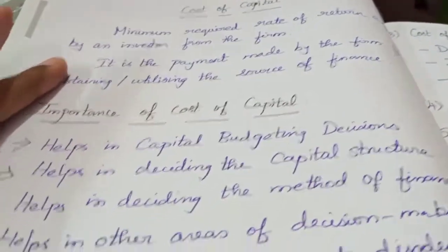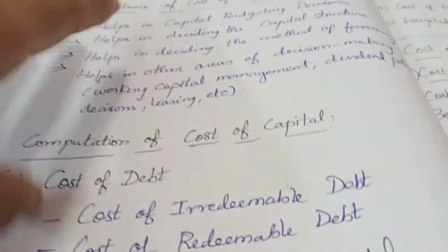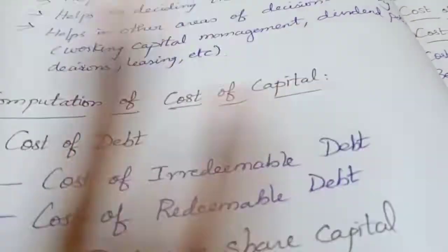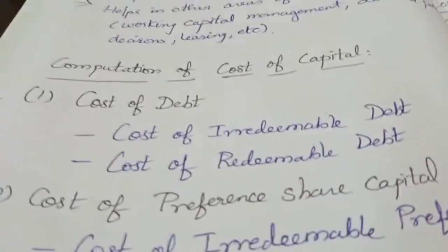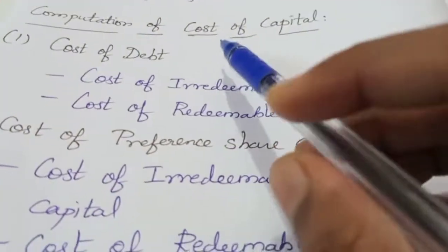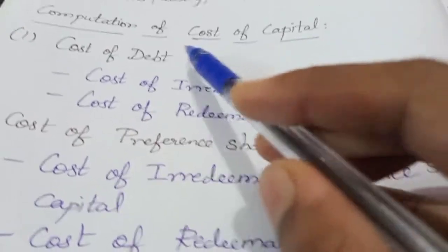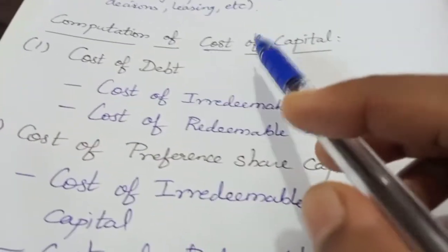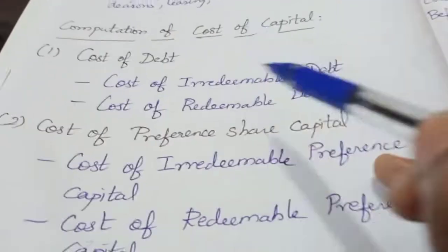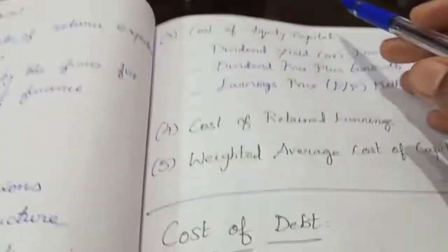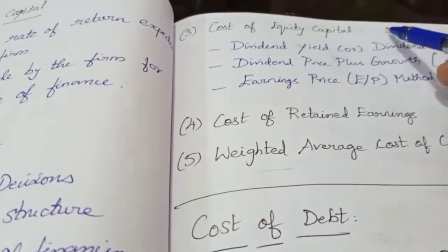So next, we will see how to compute this cost of capital. One company has debt — debentures, preference share capital, and equity share capital. We will now see the contents of each of these components.